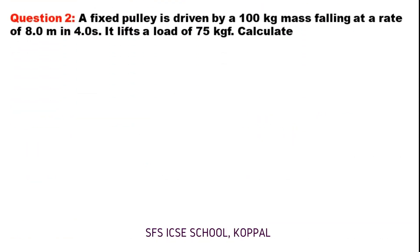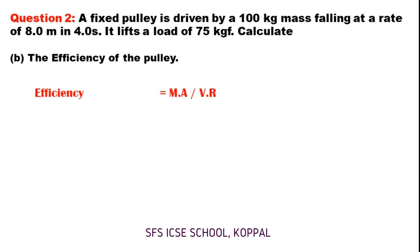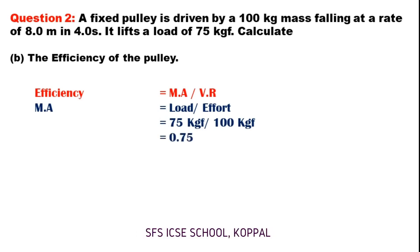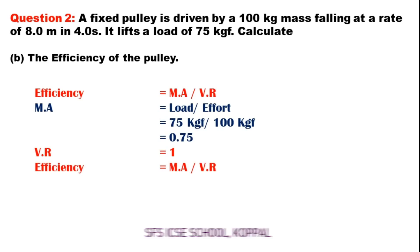Now, Part B — the efficiency of the pulley. Efficiency equals mechanical advantage divided by velocity ratio. Mechanical advantage equals load divided by effort: load is 75 kgf, effort is 100 kgf, so MA equals 0.75. Velocity ratio for a single fixed pulley is always 1. So efficiency equals 0.75 divided by 1, which equals 0.75.